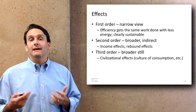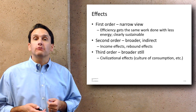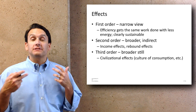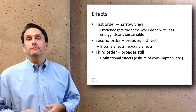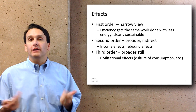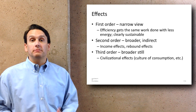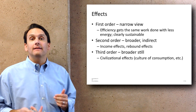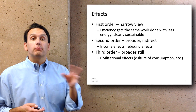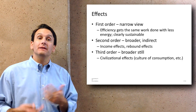There's another way to look at the idea of scale: first order effects, second order effects, and third order effects. First order effects are relatively narrow — efficiency, for example, seems like a really good thing because it gets the same work done with less energy. But looking at second order effects — broader indirect effects — if you do something more efficiently you save money, and what do you do with that money? You may spend it on a trip to Hawaii, so the money saved might create other environmental issues. Third order effects are broader still — broad-scale civilizational effects like a culture of consumption, where people get in the habit of using a lot of stuff because it's so freely available.